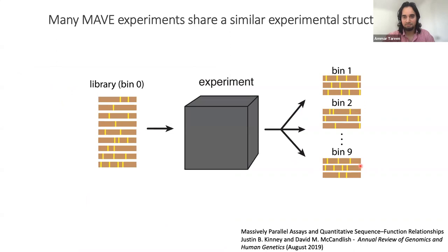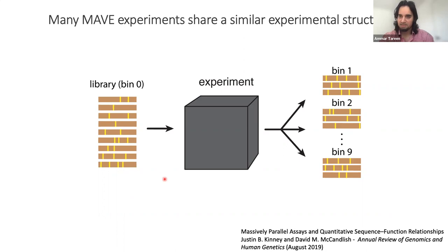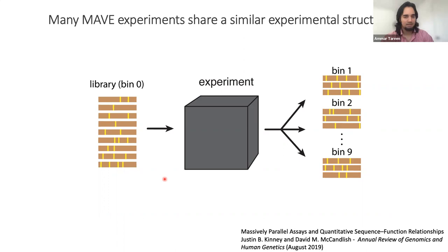Before getting into the MAVE-NN modeling strategy, I want to discuss the experimental structure of MAVEs and the format of resulting data, because many MAVE experiments share a similar structure. In general, a library of sequences containing mutations relative to wild type serve as input to an experiment. The experiment outputs sequences into one or more bins depending on each sequence's measured molecular phenotype, and these sequences in each bin are tallied through high-throughput DNA sequencing. The resulting datasets often come in two formats: sequence counts in bins, and a real number for each sequence.